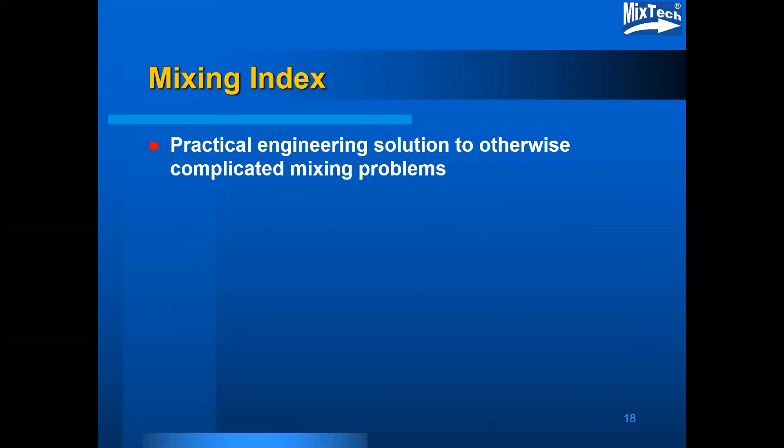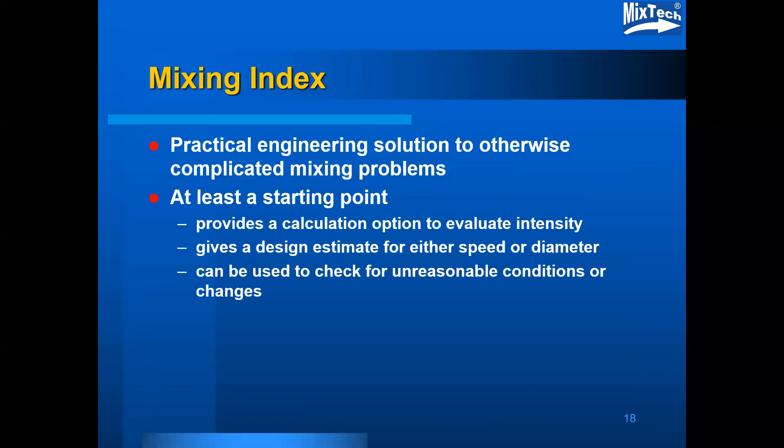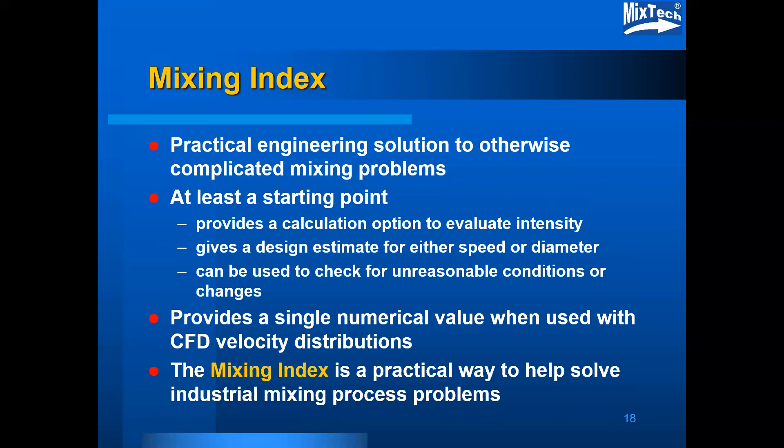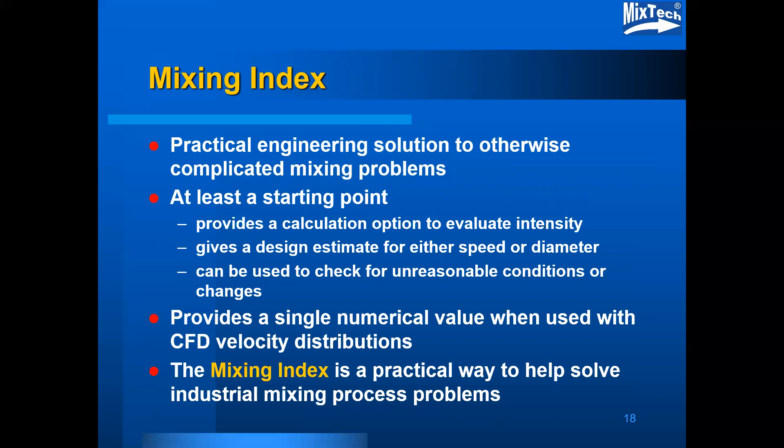The mixing index provides a practical engineering solution to otherwise potentially complicated mixing problems. It's at least a starting point. It provides calculated options to evaluate intensity, can be used for design by estimating either the speed or diameter for a particular proposed design, and can be used to check for unreasonable conditions or changes. It provides a single numerical value when used with CFD velocity distributions, and the mixing index is a practical way to help solve industrial mixing process problems.